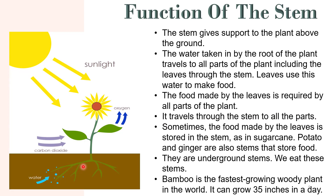As we can see in this image, water from the ground is taken in by the roots and transferred to all parts of the plant. The leaves use it to make food, which is again transferred through the stem to all parts. Sometimes food made by the leaves is stored in the stem. Potato and ginger are underground stems that store food. Bamboo is the fastest growing woody plant in the world — it can grow 35 inches in a day.